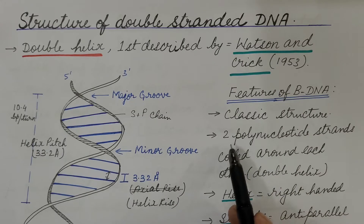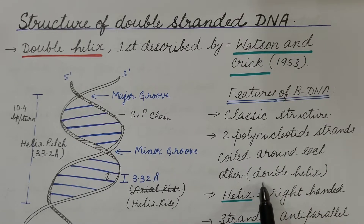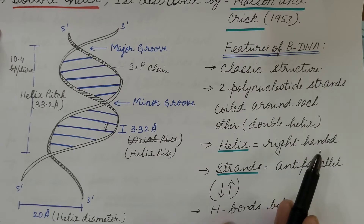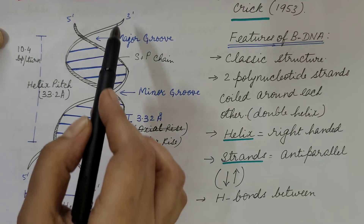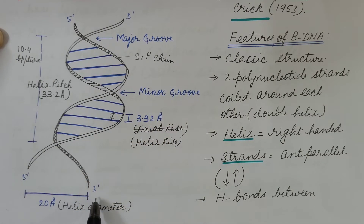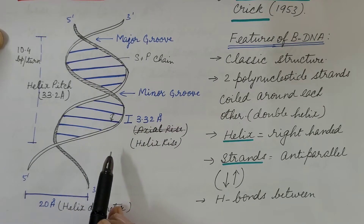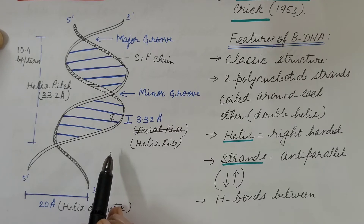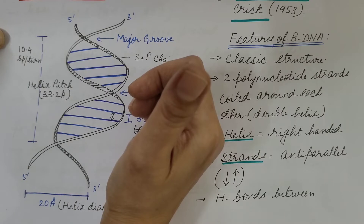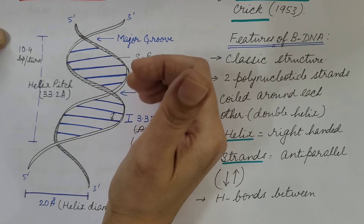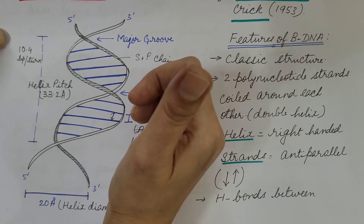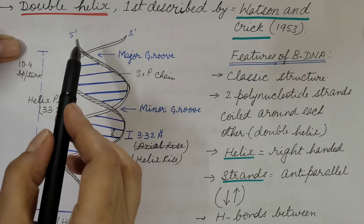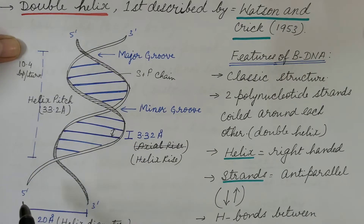B-DNA is the classic structure where two polynucleotide strands are coiled around each other to form a double helix. The helix is right-handed — if you keep your right hand such that the thumb denotes the axis of the DNA, the fingers represent the direction in which the strands are coiled. The two strands are antiparallel, meaning if one strand runs 5′ to 3′ in one direction, the other strand runs 5′ to 3′ in the opposite direction.